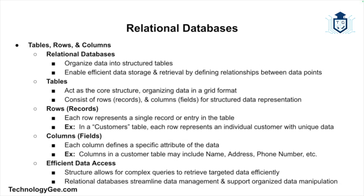Relational databases organize data into tables consisting of rows, also known as records, and columns, also known as fields. Each row in a table represents a single record or entry — for example, in a customer table, each row would represent a different customer. Each column represents a specific attribute of the data, such as a customer's name, address, or phone number. This structure makes it easy to run complex queries and retrieve specific data efficiently.